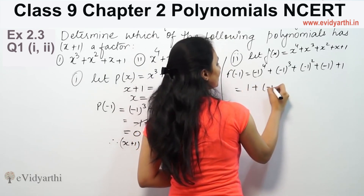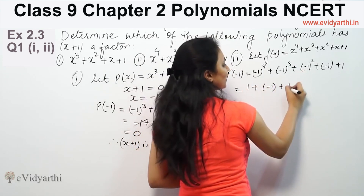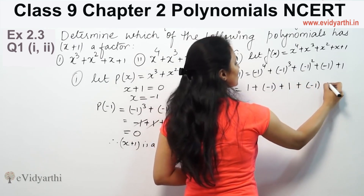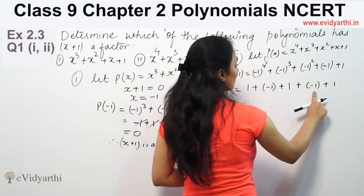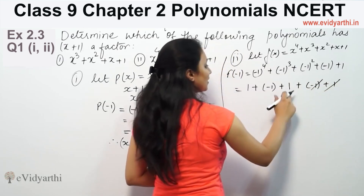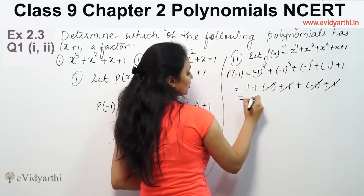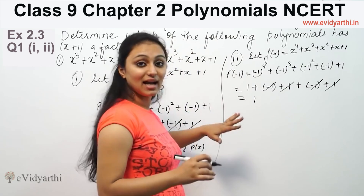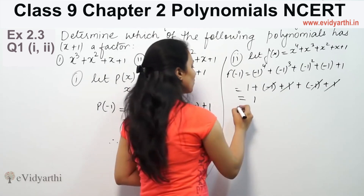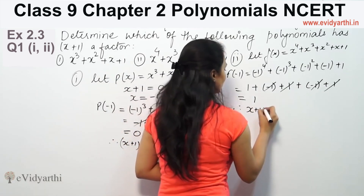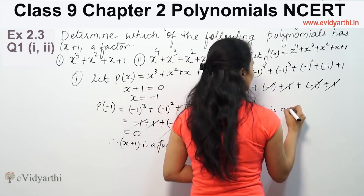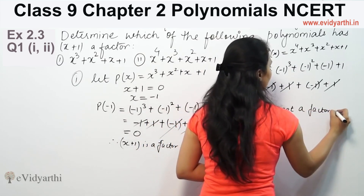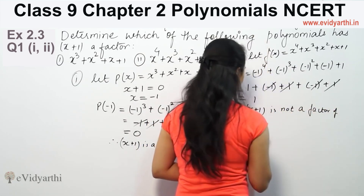Minus 1 cubed is minus 1, and minus 1 squared is 1. So f(minus 1) equals 1 minus 1 plus 1 minus 1 plus 1. The positive 1 and negative 1 pairs cancel, but we are left with a remainder of plus 1. Since the remainder is 1 and not 0, x plus 1 is not a factor of f(x).